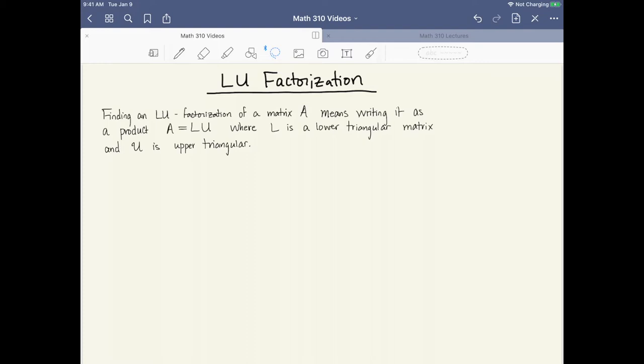As a quick example, consider the two-by-two matrix [1, 2; 1, 0]. Here's one possible LU factorization. The L is the lower triangular matrix [1, 0; 1, 1] and the U is the upper triangular matrix [1, 2; 0, -2]. The lower triangular matrix has zeros above the diagonal and the upper triangular matrix has zeros below the diagonal.